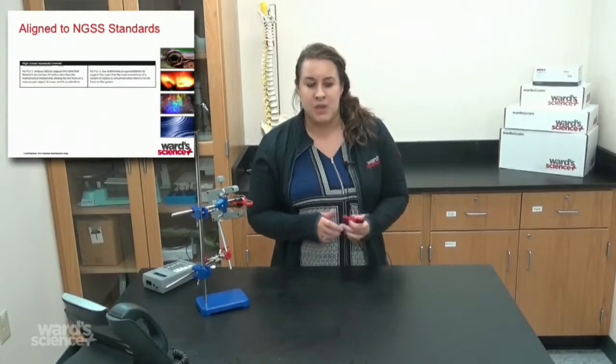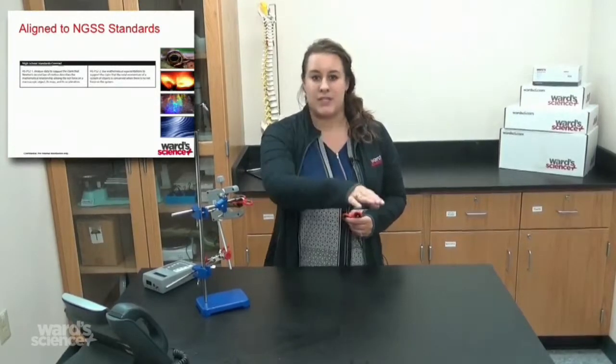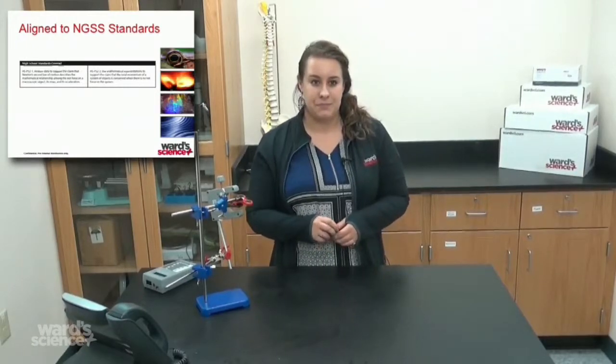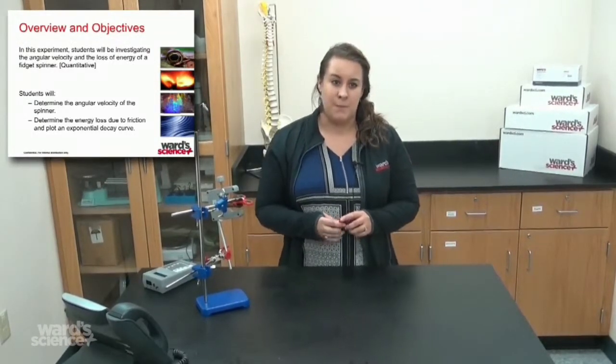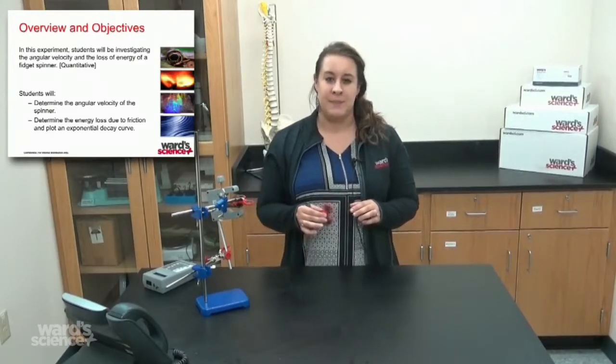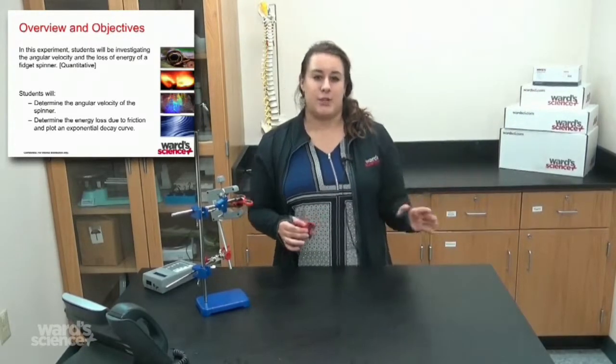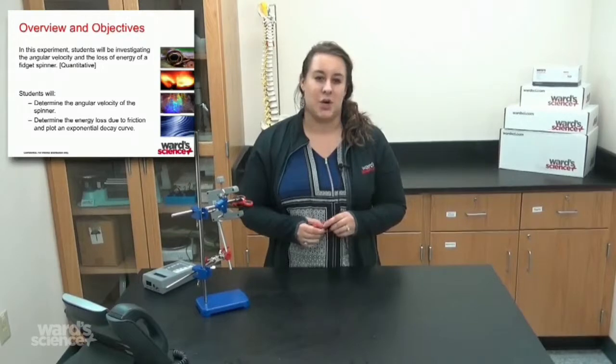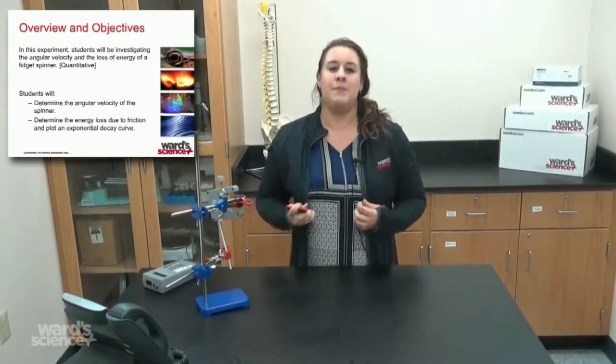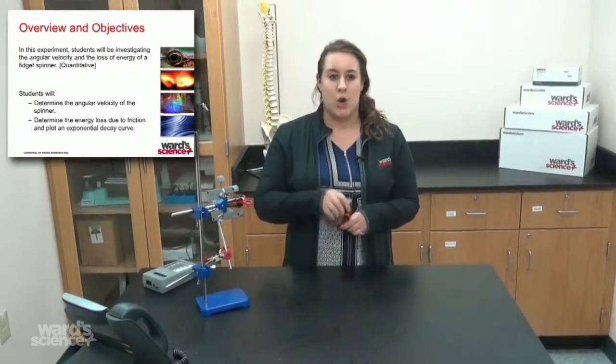Overview and objectives of the high school level: In this experiment, students will be investigating the angular velocity and the loss of energy of a fidget spinner. Remember, the elementary kit was more qualitative in nature—we're thinking about what it's really doing. The high school version is more quantitative.